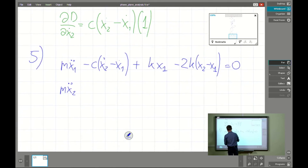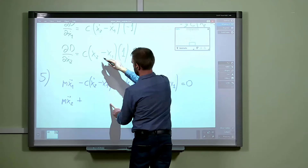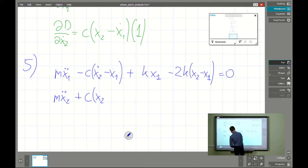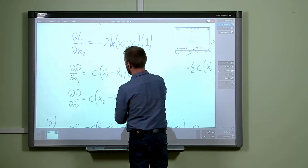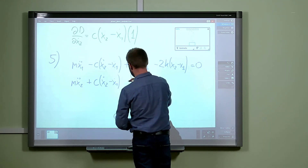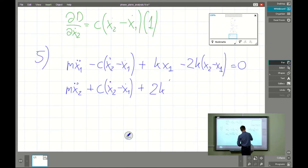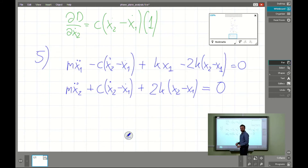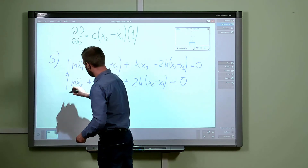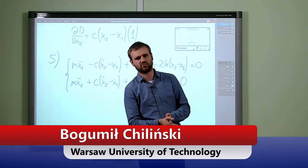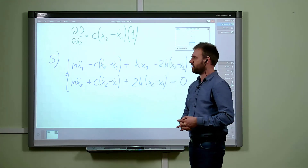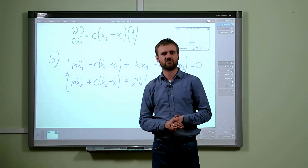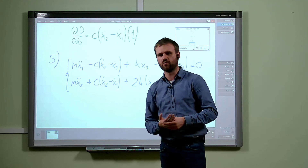For the second generalized coordinate, the inertia force is m2 ẍ2, the damping term has a positive sign plus c·(ẋ2 − ẋ1), and the elastic term reduces to plus 2k·(x2 − x1) = 0. Using Lagrangian mechanics we are able to find the system of governing equations that describes the dynamics of the entire system, and by solving them we can find the motion of the system.